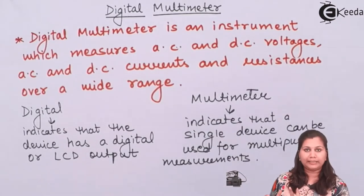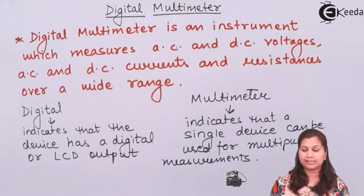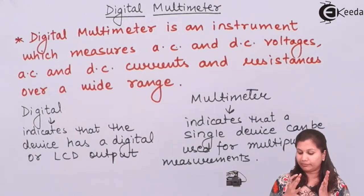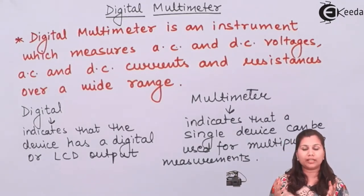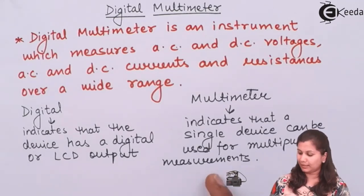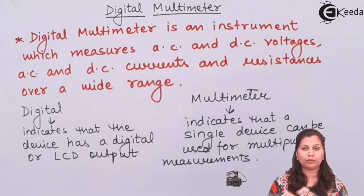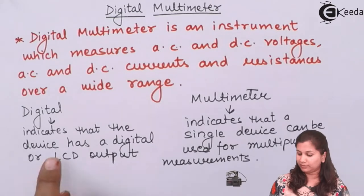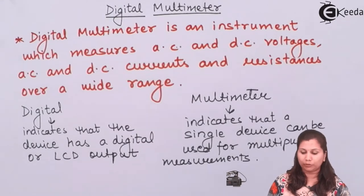So when we combine these two terms — digital multimeter — it means it is an instrument which is going to measure various parameters, one or more parameters it can measure, and it is going to give the value of that parameter in the form of a digital output on the LCD screen.